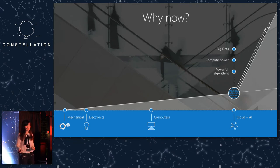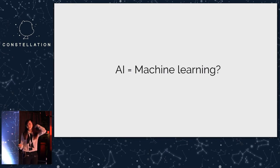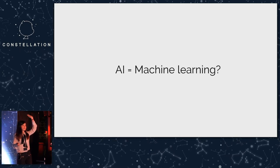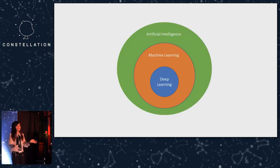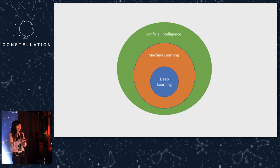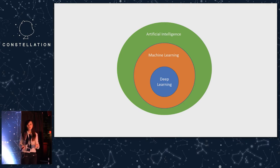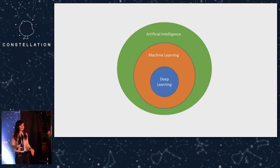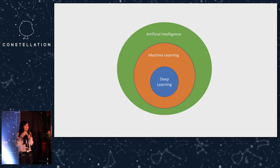Show of hands — who thinks AI is machine learning? It's sort of true, but actually they are slightly different concepts. AI is a broad thing: a machine mimicking human intelligence. Machine learning is an implementation of AI — you take historical data and use it to make predictions. It's probably the most effective implementation of AI right now. Deep learning is an implementation of machine learning involving neural networks. There's an overlap between all of them, but it's important to understand each concept.